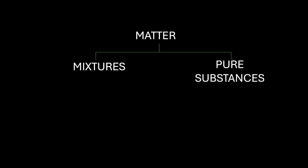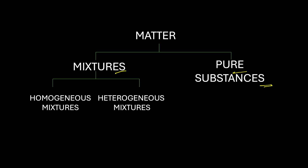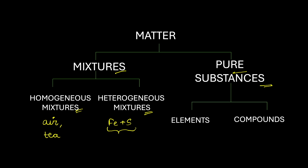To summarize: matter can be divided into mixtures or pure substances. Mixtures can further be divided into homogeneous or heterogeneous mixtures. Examples of homogeneous mixtures include air, tea, or sugar solution. An example of a heterogeneous mixture is iron and sulphur mixed in a random ratio. Pure substances can be elements or compounds — examples of elements include hydrogen, oxygen, or gold; and examples of compounds include iron sulphide and water. These all have immense importance in chemistry.